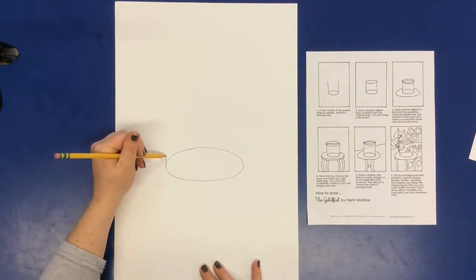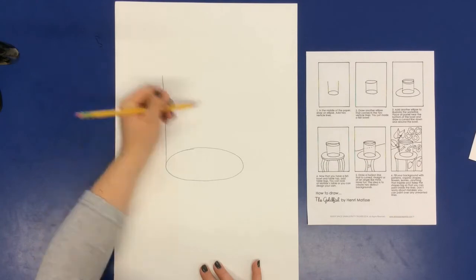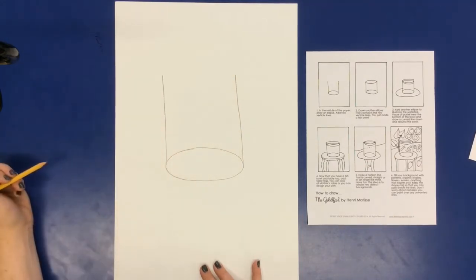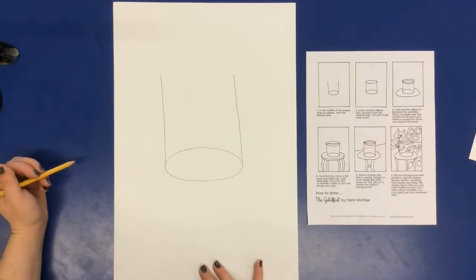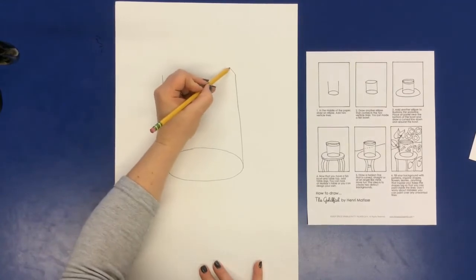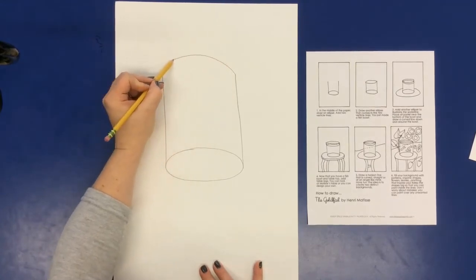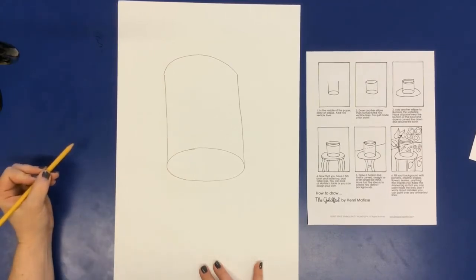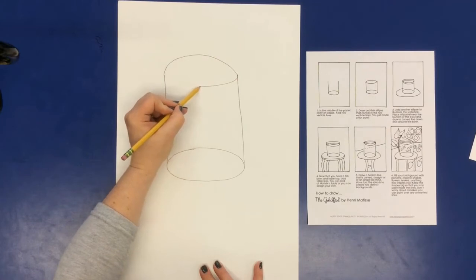And then we're going to draw two lines going up, and what we're going to then do is we'll add a rainbow on top to connect the two pieces. Don't worry if it's not perfect, and our rainbow on the bottom.